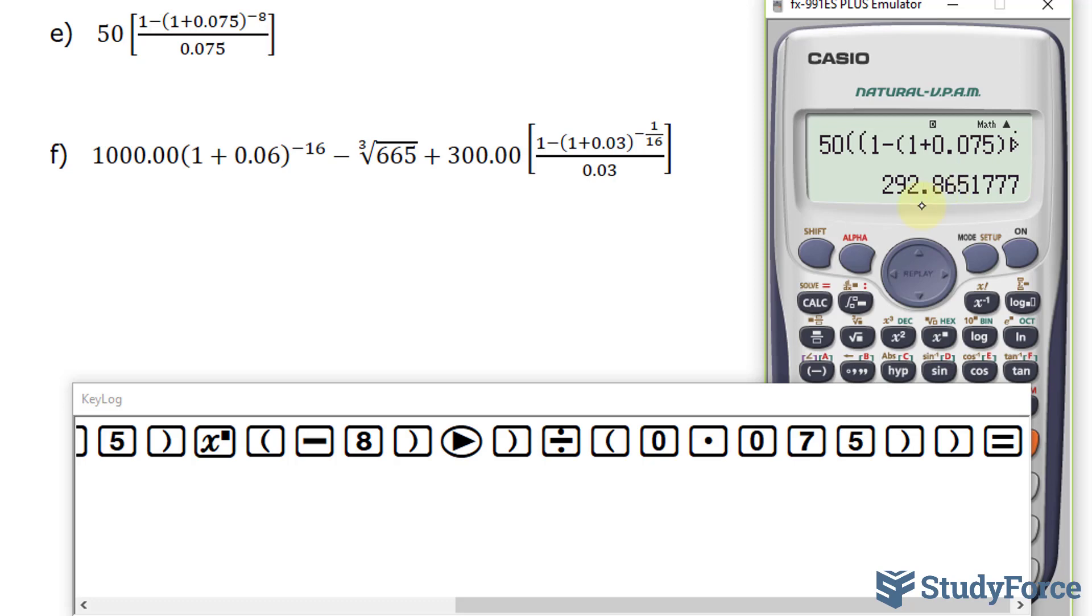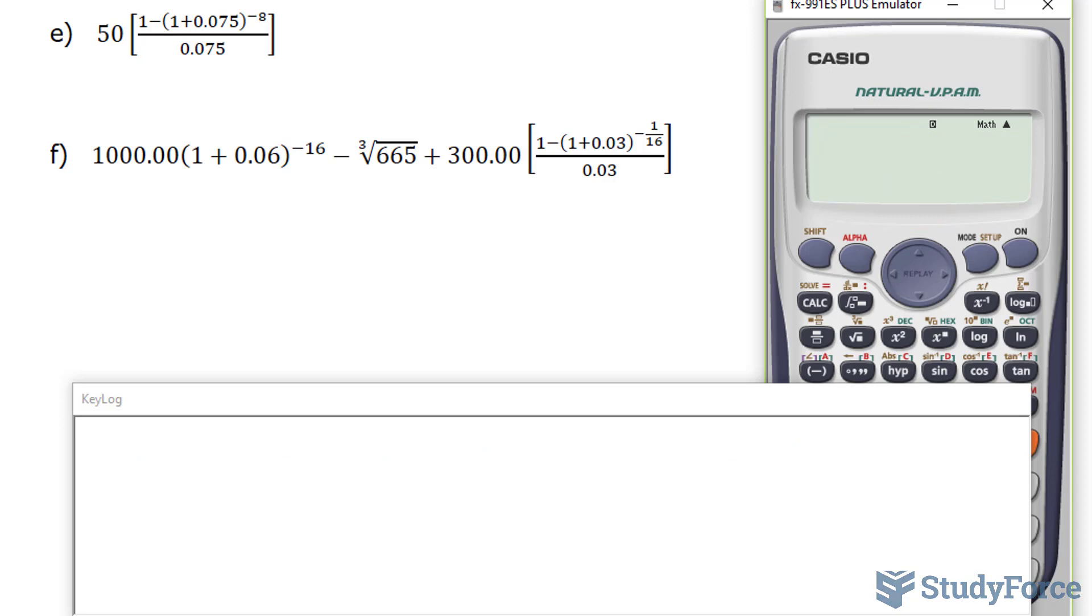Finally, in question F, we have this very large expression. And you'll notice this term has a radical symbol. That's the third root of 665. I'll show you how to tackle that on your calculator when we get to it. So let's begin.